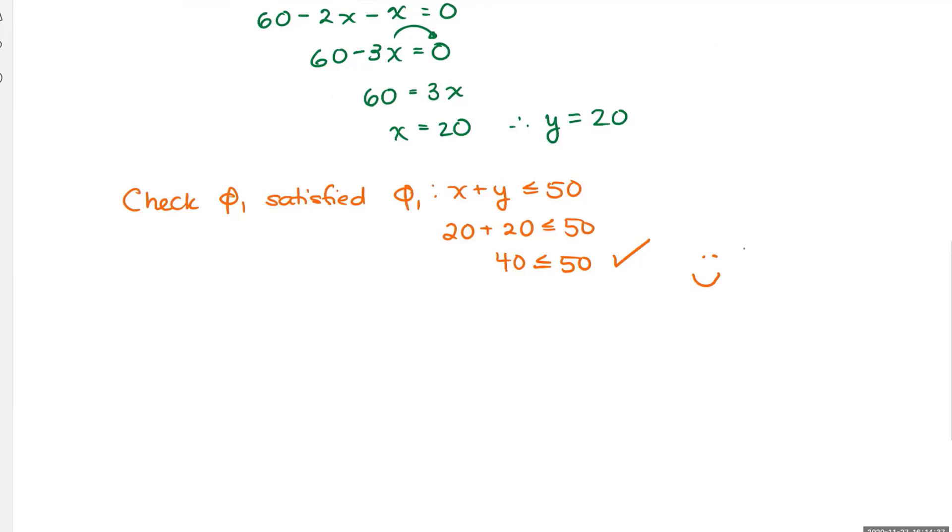My solutions are that x is equal to 20 and y is equal to 20 to maximize my utility. And of course, afterwards, I would solve for the utility. My utility is equal to x squared y. That's going to give me 20 squared times 20. My maximum utility that meets these constraints is 8,000.